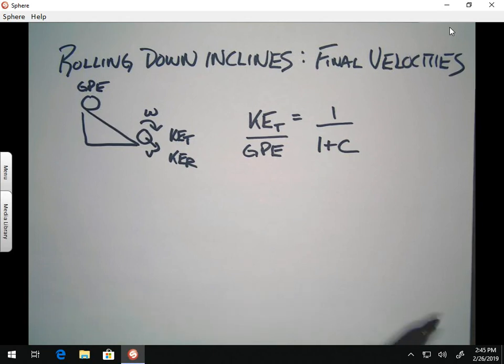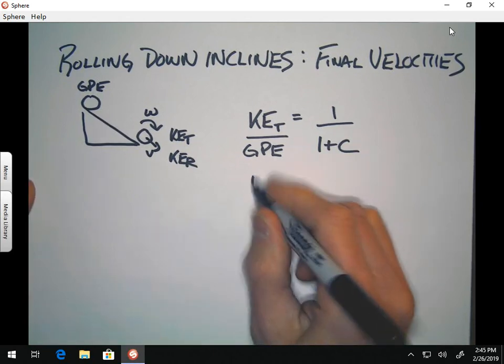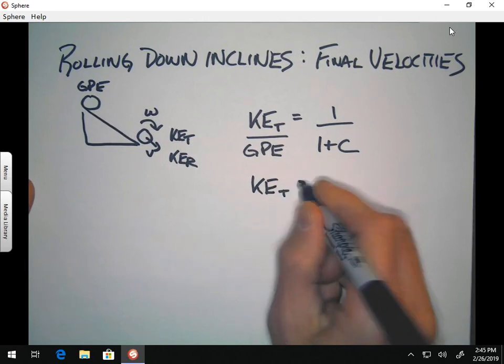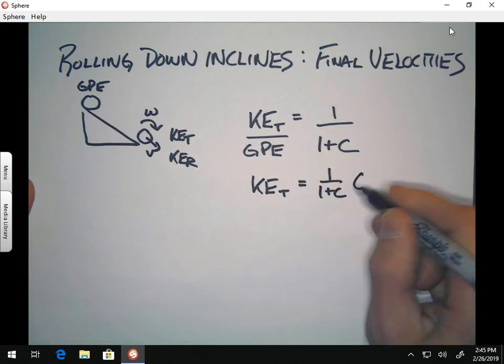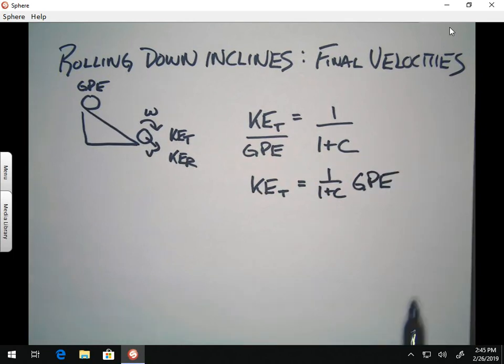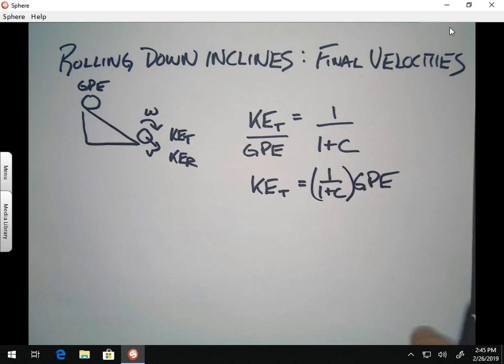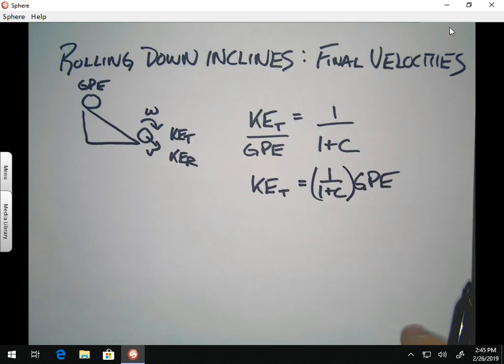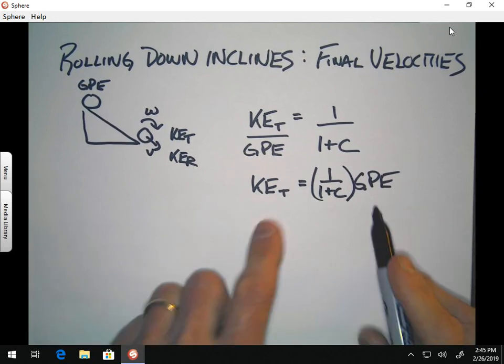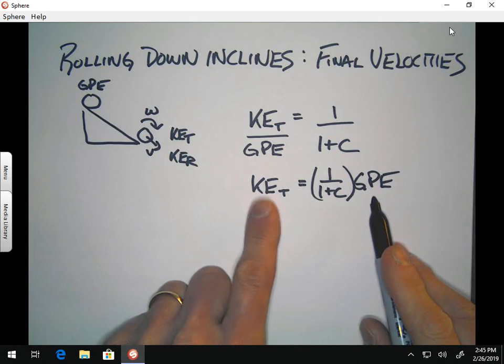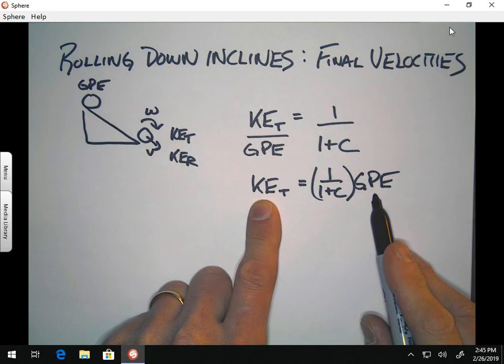What I'm going to do is I'm going to rearrange that by cross-multiplying GPE, and I'm then going to basically substitute in the formula for kinetic energy and for gravitational potential energy, and I'm going to try to solve for the velocity V.